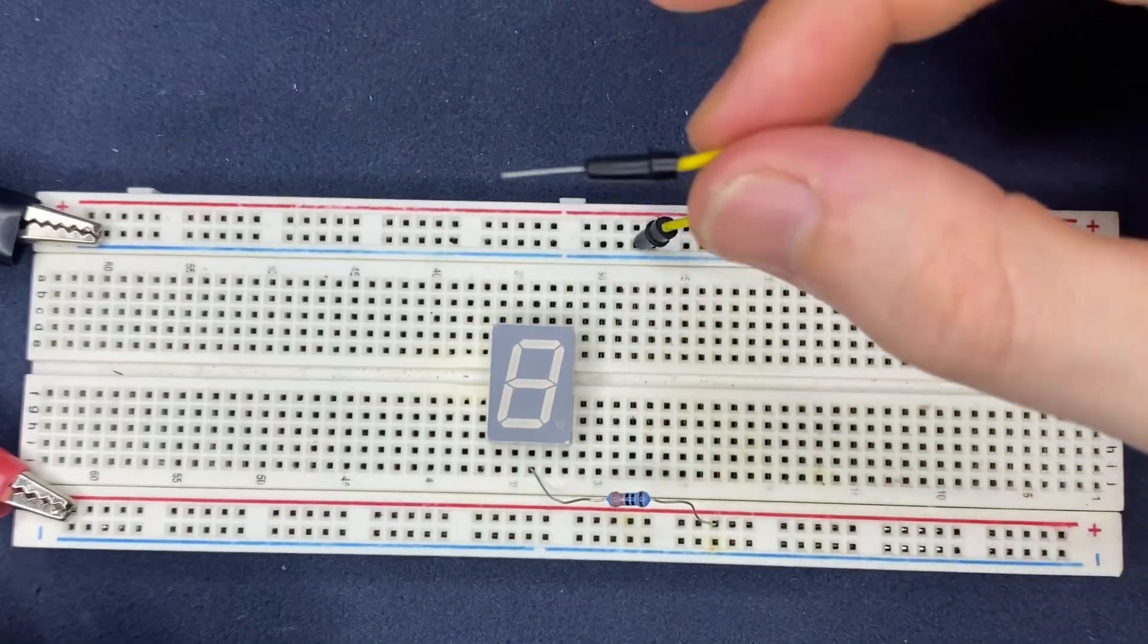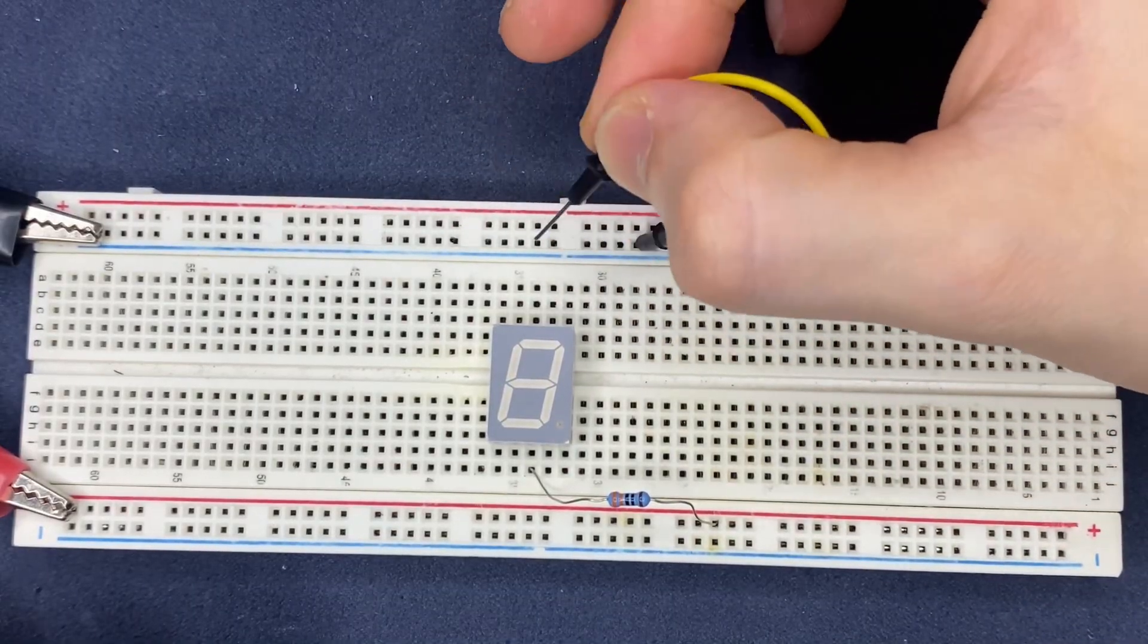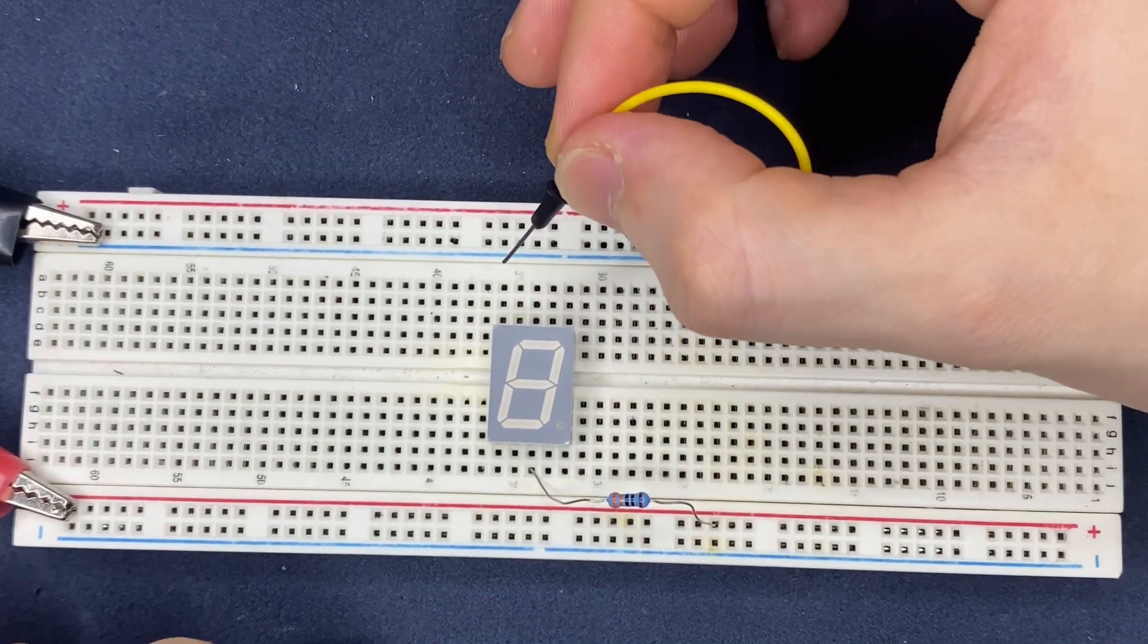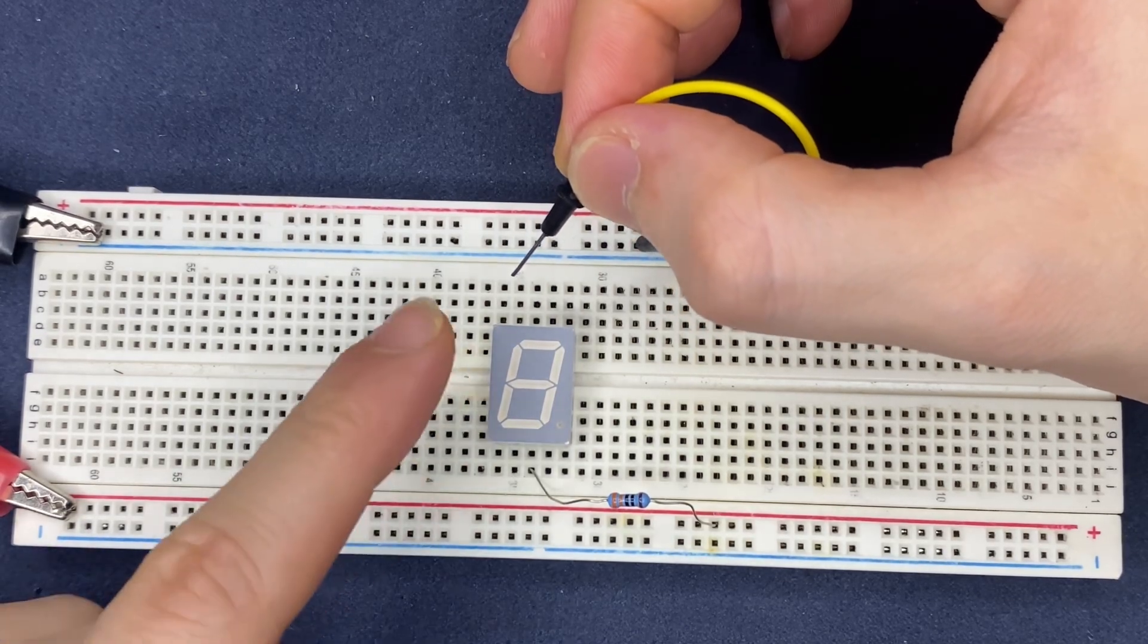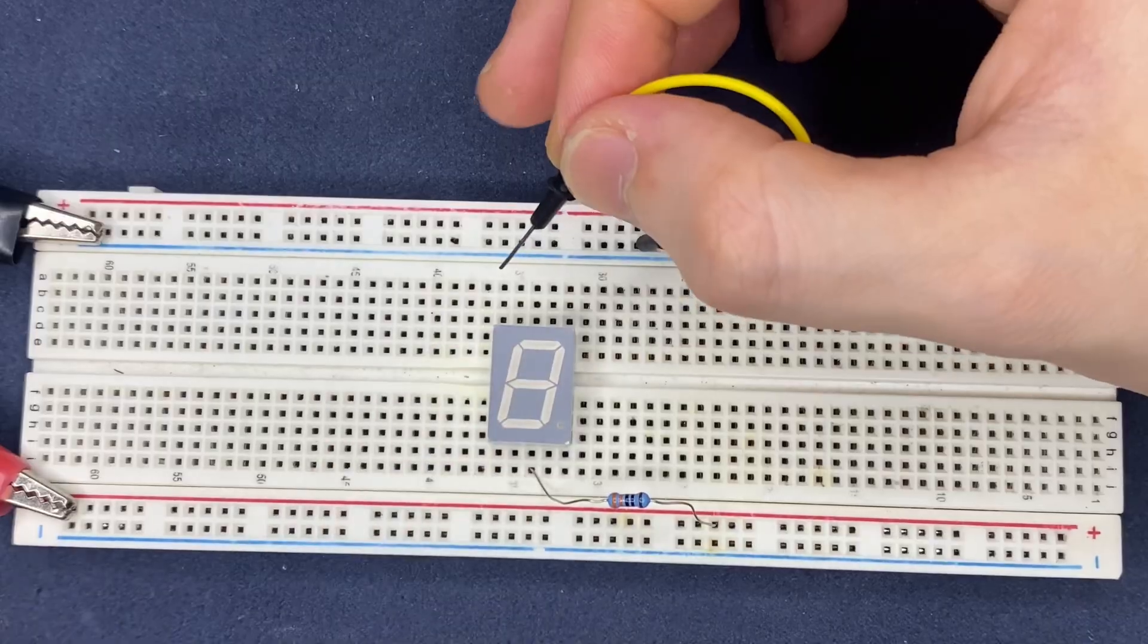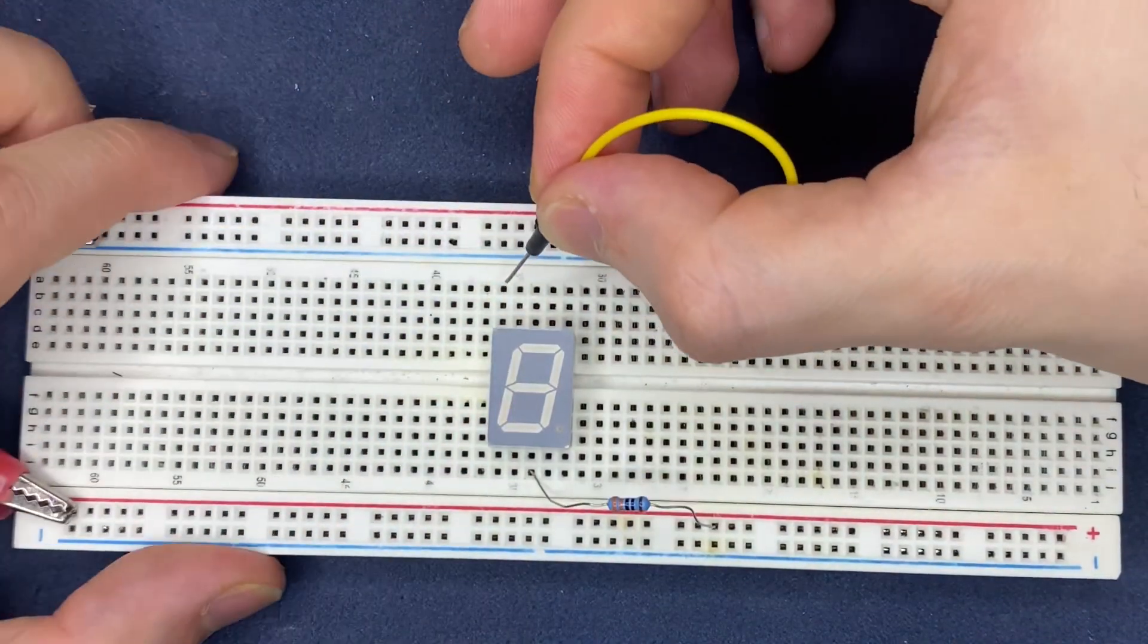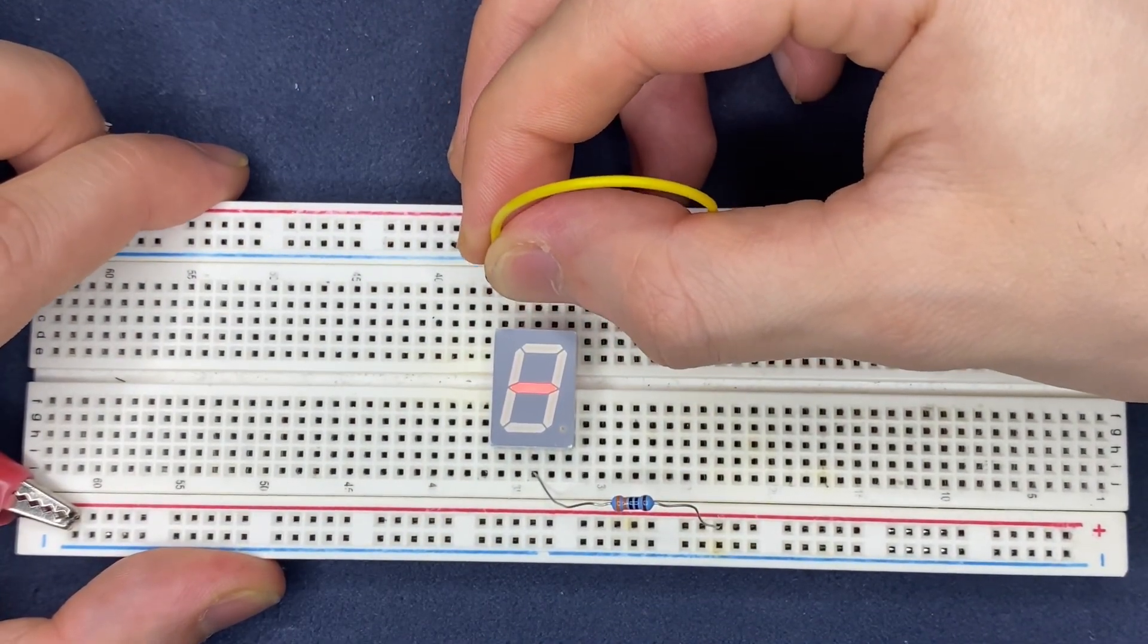And via this jumper wire, I'm going to test each segment, and if one of the segments glow up, it means that the 7-segment display is common anode. So let's see, as you can see, we have a common anode.